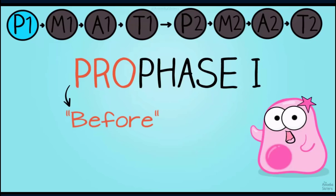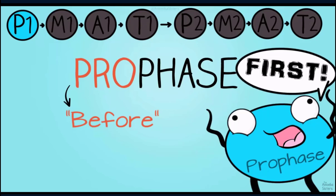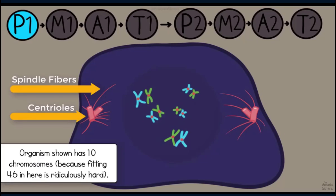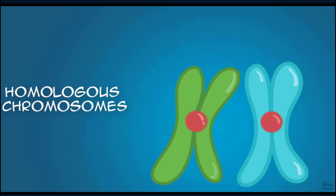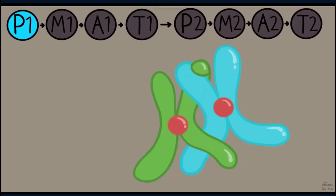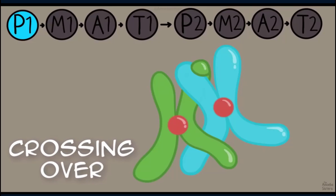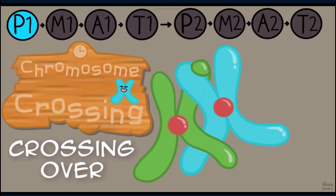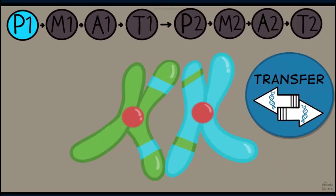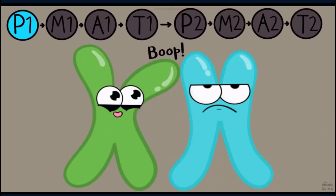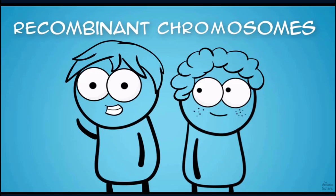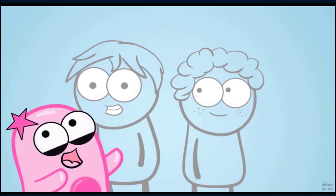Let's start with prophase one. 'Pro' means before, helping you remember it comes before all other stages. The chromosomes condense and thicken, and they line up with their homologous pairs — chromosomes that are approximately the same size and contain the same types of genes in the same locations. During prophase one, the amazing process of crossing over occurs. Chromosomes lined up in homologous pairs exchange genetic information, making recombinant chromosomes that contribute to the variety seen even among siblings with the same parents.